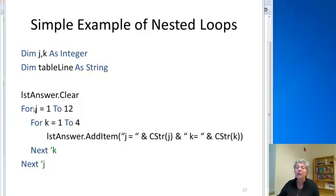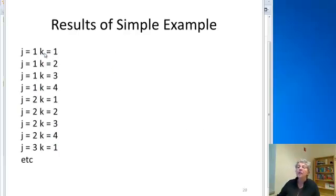Then I'll do my next value for j, which would be 2. And I'll go through all the values of k again, 1, 2, 3, and 4, with j equal 2, and so on. So here's what we'll print, at least for the beginning, and here is j equal to 1 with all the k's, j equal 2 with all the k's, starting the 3, and so on.